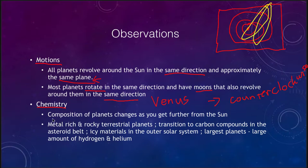In terms of chemistry, we find that the composition of the planets changes as you get further away from the Sun. Close to the Sun we have the terrestrial planets, which are metal and rocky. As we go into the asteroid belt, we transition more into carbon compounds. And when we get to the outer solar system, we get icy materials, with the largest planets having lots of hydrogen and helium. So there's a difference in compositions between planets close to the Sun versus those further away, and that's something we have to be able to explain.